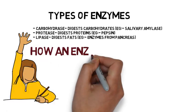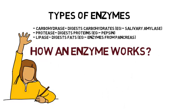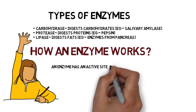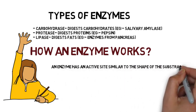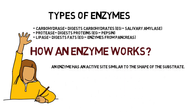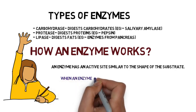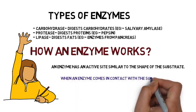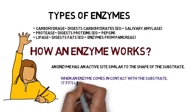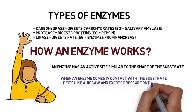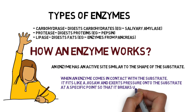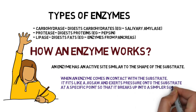How an enzyme works: an enzyme has an active site similar to the shape of the substrate. When the enzyme comes into contact with the substrate, it fits like a jigsaw and exerts pressure onto the substrate at a specific point so that it breaks up into a simpler substance.